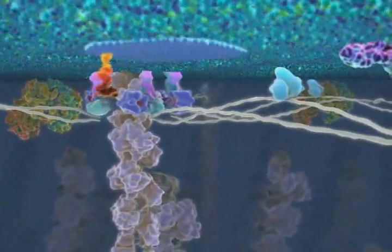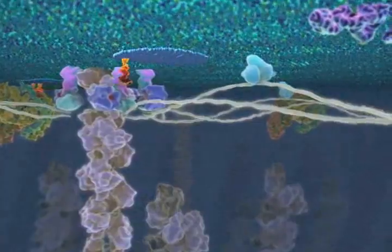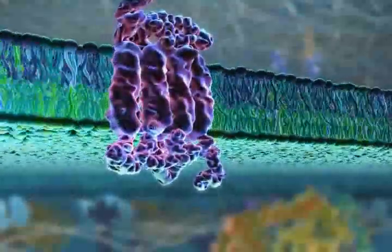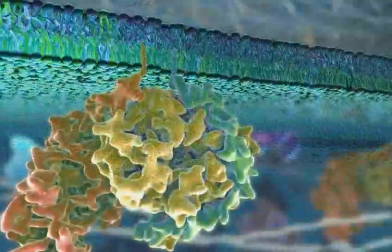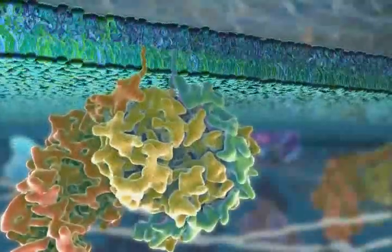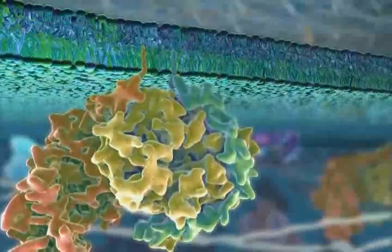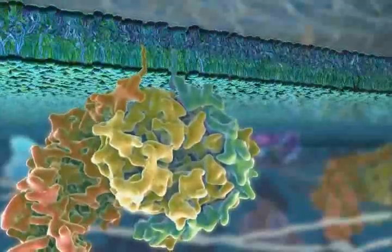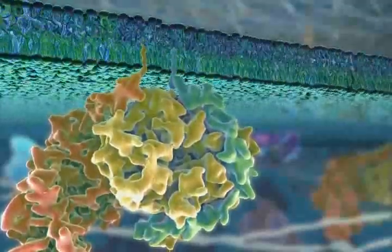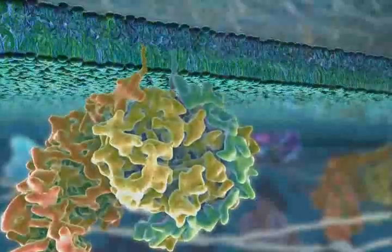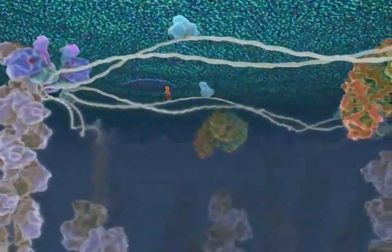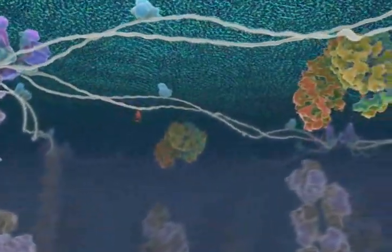The inner leaflet of the bilayer has a very different composition than that of the outer leaflet. While some proteins traverse the membrane, others are either anchored into the inner leaflet by covalently attached fatty acid chains or are recruited through non-covalent interactions with membrane proteins. The membrane-bound protein complexes are critical for the transmission of signals across the plasma membrane.